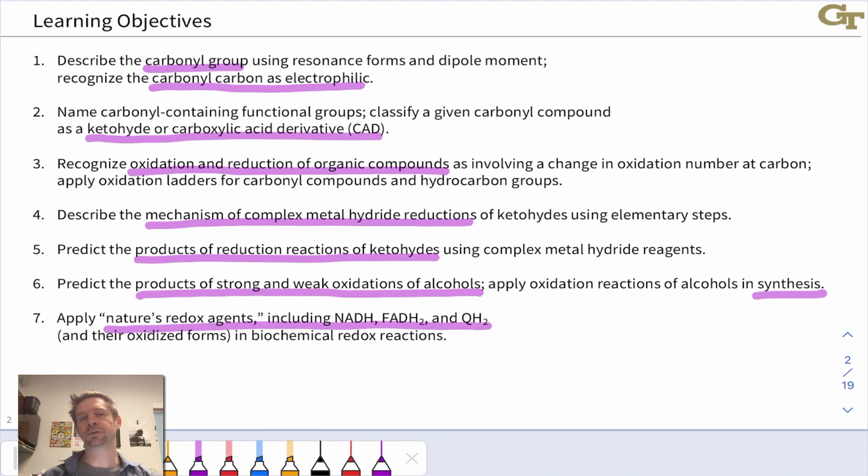Then we're going to make an important distinction between two classes of carbonyl-containing functional groups with or without a heteroatom bearing a lone pair connected to the carbonyl carbon. Ketones and aldehydes lack that heteroatom, and carboxylic acid derivatives, or CADs as I like to call them, do have that lone pair.